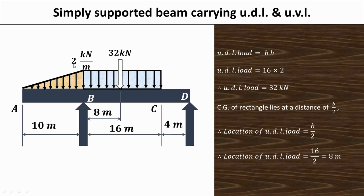The meaning of uniformly distributed load is: for 1 meter length the load is 2 kN, so for 16 meter it will be 16 × 2 kN.